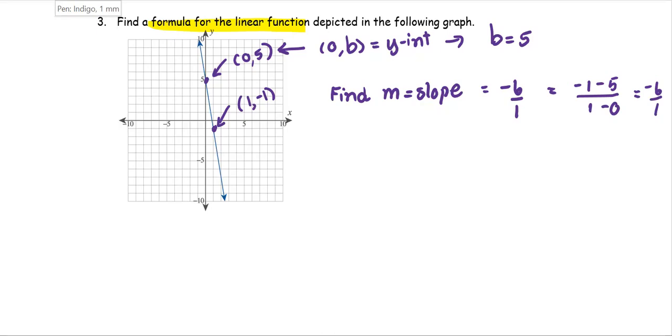Now we have obtained m and b, we can put together the linear function f(x) equals mx plus b, which is f(x) equals negative 6x plus 5.